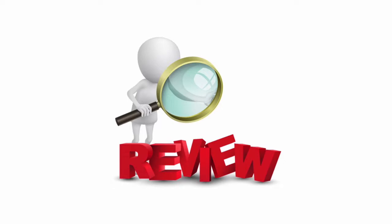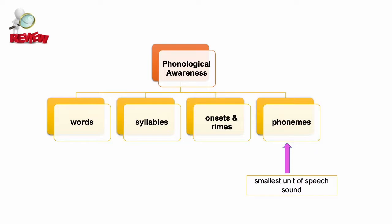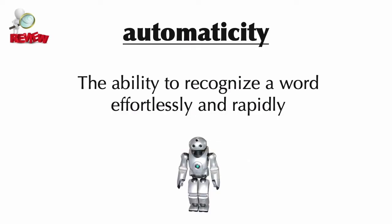Before we dive into new information, let's review some essential background knowledge from previous CAPs and class sessions. One key concept is that phonological awareness is a broad set of skills that is the basis for early literacy. We've also learned that phonemes are the smallest unit of speech sound. Phonics instruction is focused on students' ability to identify and use phonemes, which is their phonemic awareness. Automaticity is the student's ability to recognize a word effortlessly and quickly.